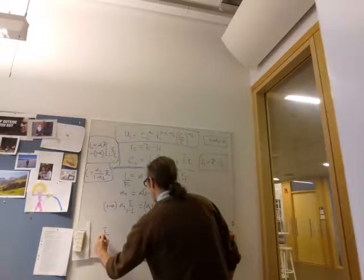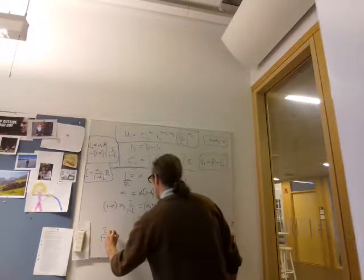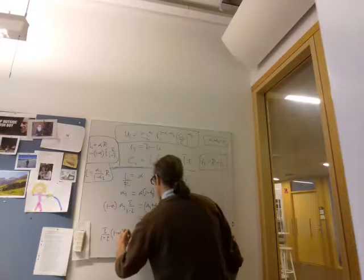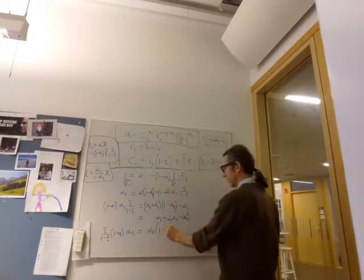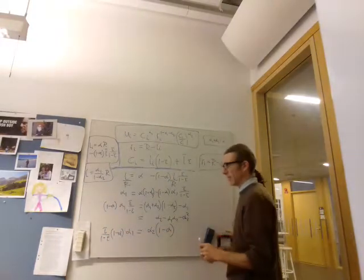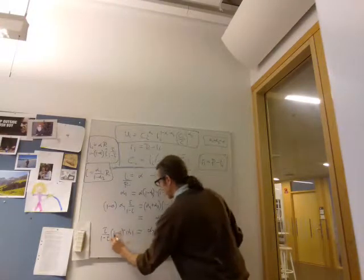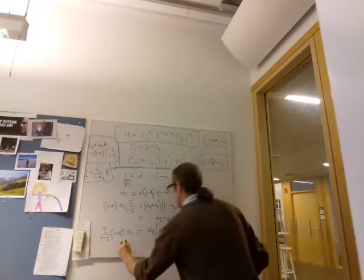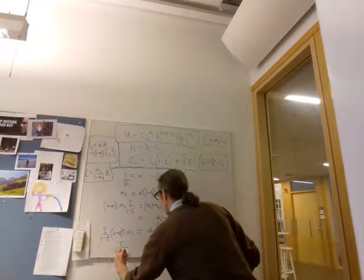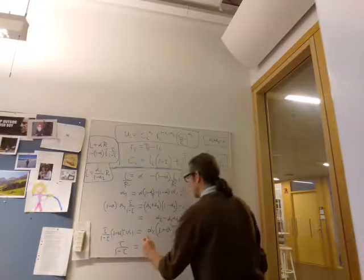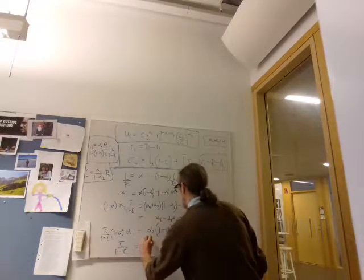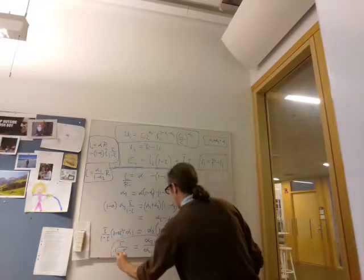So tau over 1 minus tau, 1 minus alpha, alpha 1 is alpha 2 times 1 minus alpha. These cancel out.